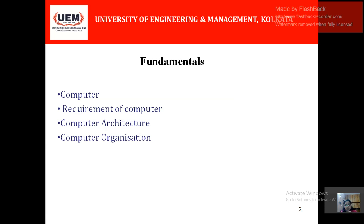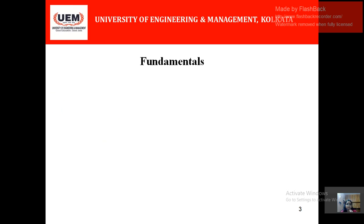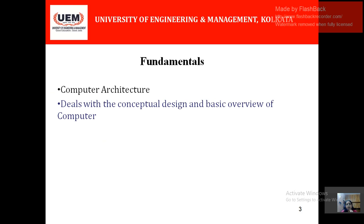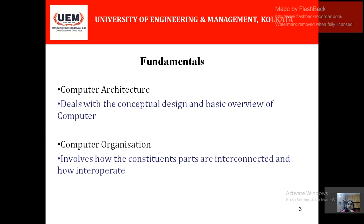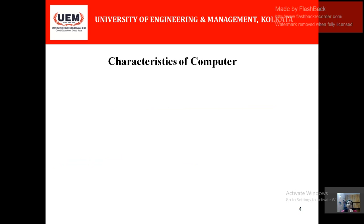Computer organization basically deals with how things are getting organized within the architecture — how the things are getting organized within a computer to realize the architecture. Computer architecture deals with the conceptual design and the basic overview of a computer, while computer organization is basically how the constituent parts are interconnected and how they interoperate to realize the architectural requirement.